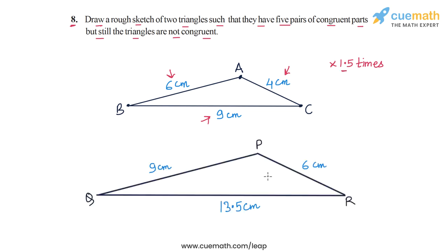Let's observe the sides of triangle PQR carefully. Side PR is 6 cm, because AC was 4 cm and 4 × 1.5 = 6. So 4 cm became 6 cm.